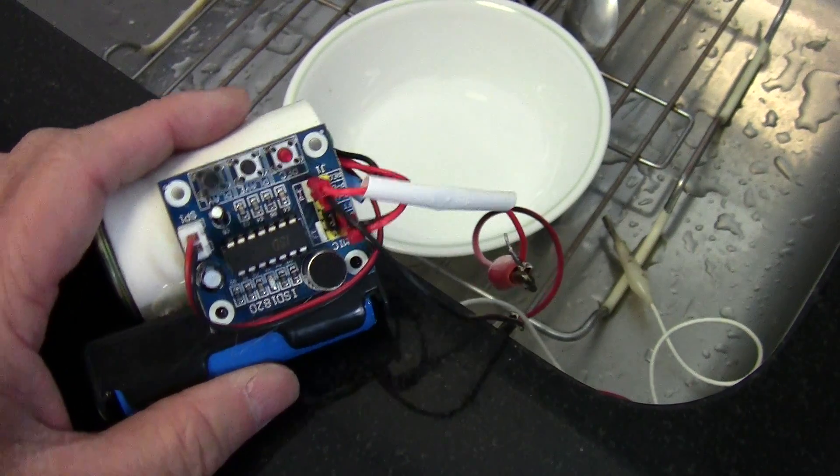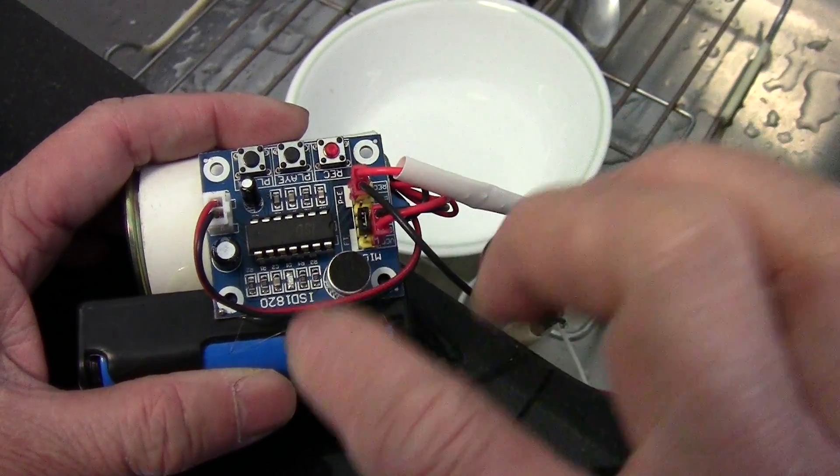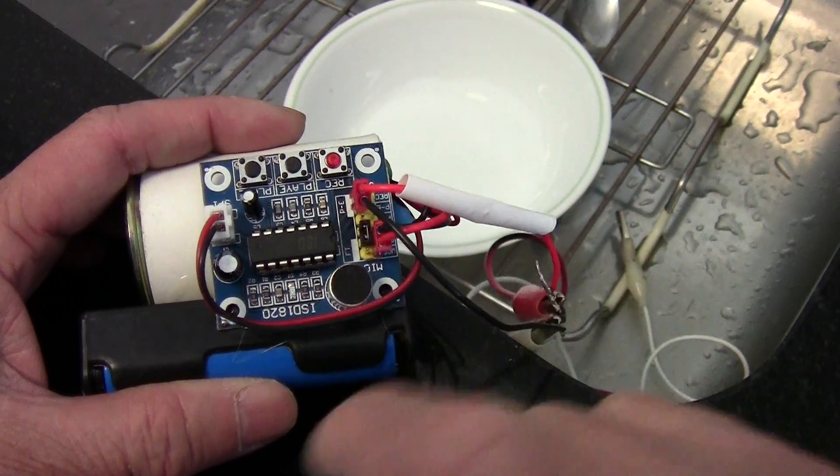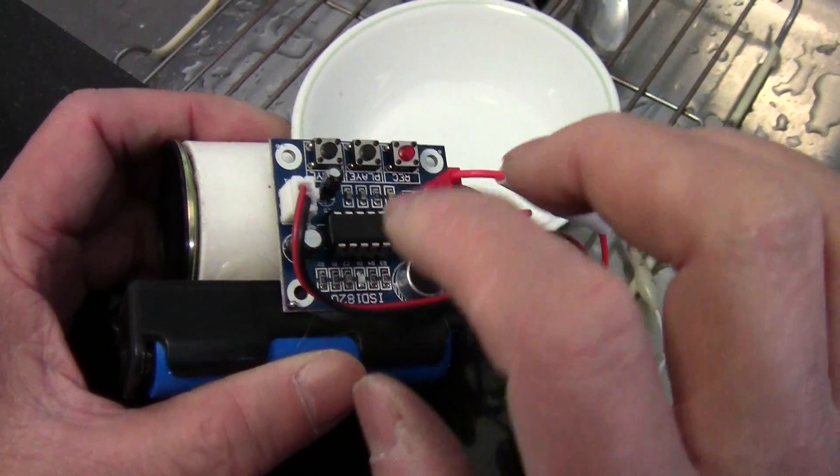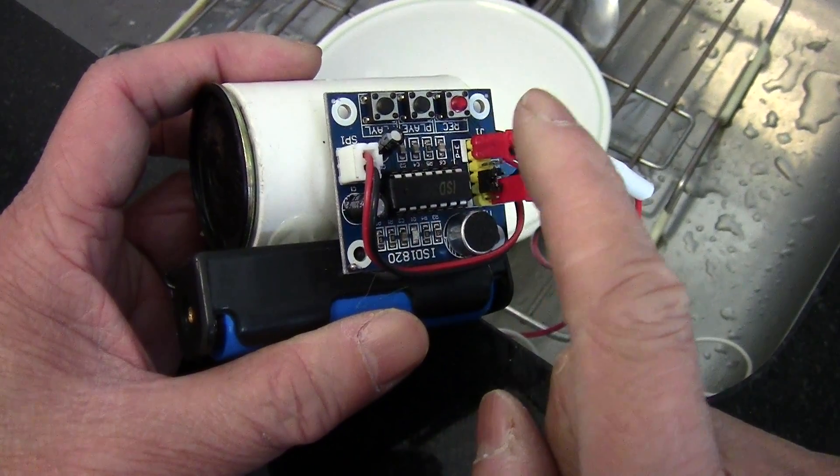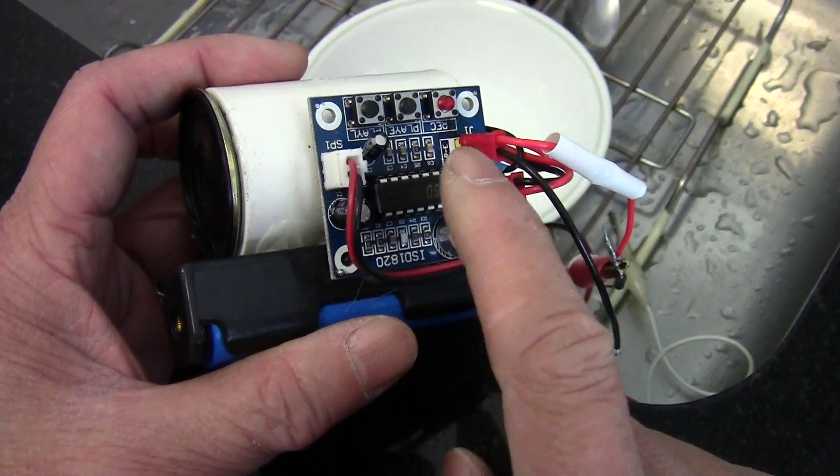So how does this thing work? Like I said, this is the 1820 circuit board ISD 1820. You can buy it off eBay for a couple of dollars. I had it in my other video. 10 second recorder.